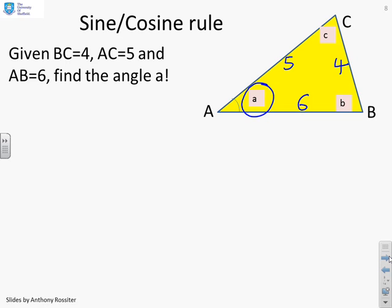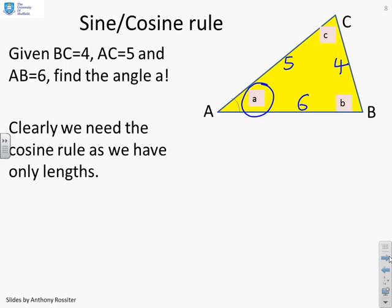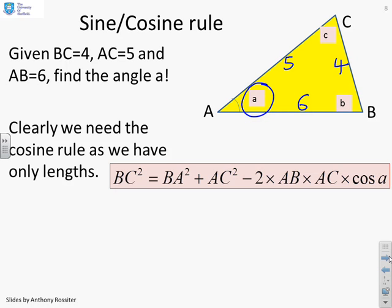Now, clearly, in this particular case, you've been given three sides and you want to find an angle. So I must need the cosine rule. So which cosine rule am I going to use? Well, because I want A, then I start with a cosine rule which has BC on the left-hand side. So you'll see I've got BC squared equals BA squared plus AC squared minus 2 times AB times AC times cos A.